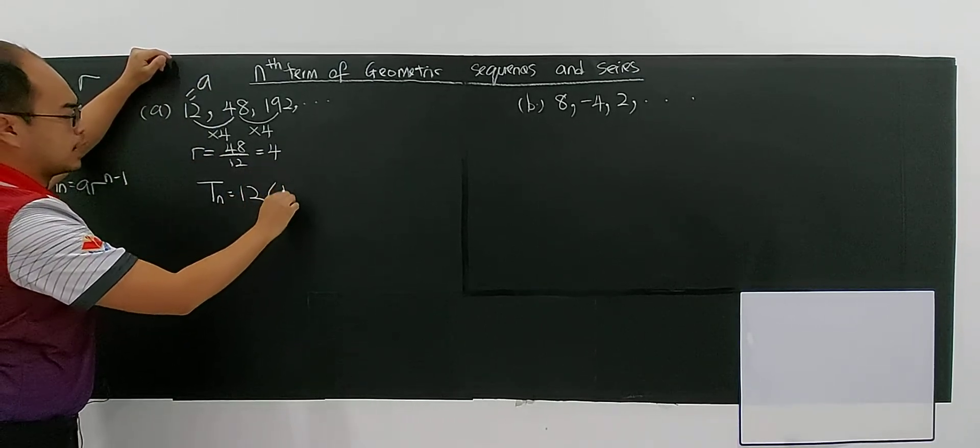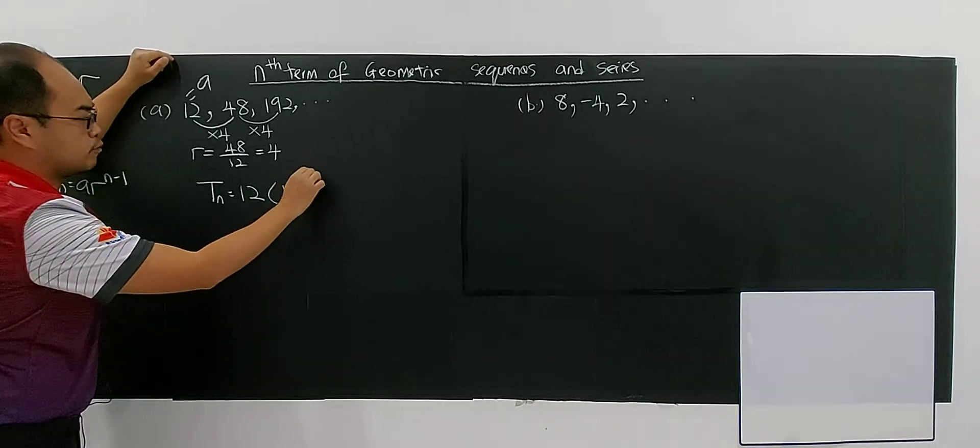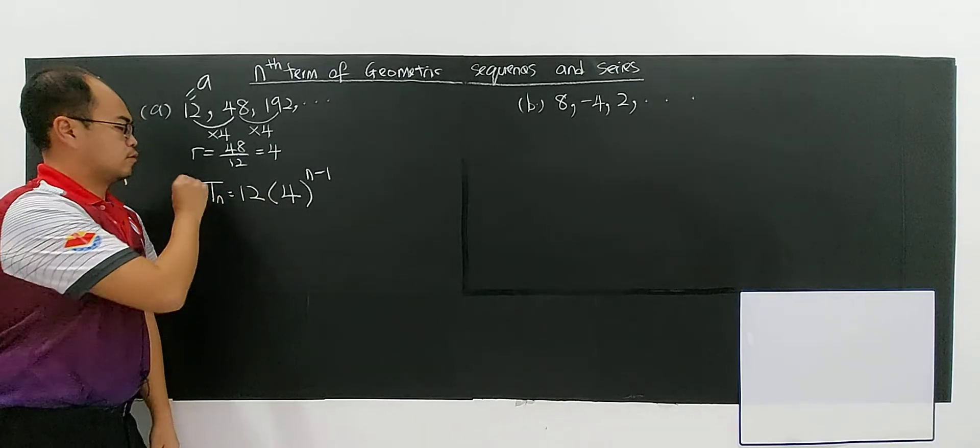Multiply with R, which is 4. So 12 times 4 power of n-1. This will be your n-term of a geometric sequence.